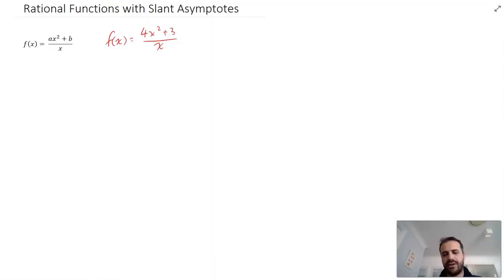The function that we just looked at, 4x squared plus 3 over x. Now if we want to find the asymptotes, the vertical asymptote is very straightforward. We just need to find out what x cannot be. And x is sitting on the bottom of the fraction, so x cannot be 0 because you're not allowed to divide by 0. So there's one of our asymptotes.